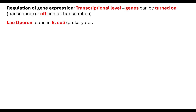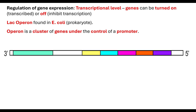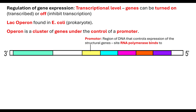The transcriptional level is where genes can be turned on — i.e. the gene can be transcribed — or the gene can be turned off and inhibited. The lac operon is an operon, a cluster of genes which are under the control of a promoter. The promoter is a region of DNA that is upstream of those structural genes and controls their expression. It is the site that RNA polymerase binds to, and then RNA polymerase will build downstream from the promoter.